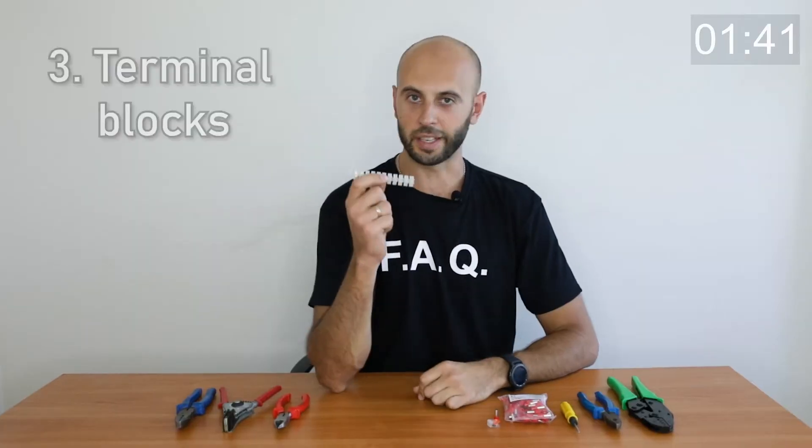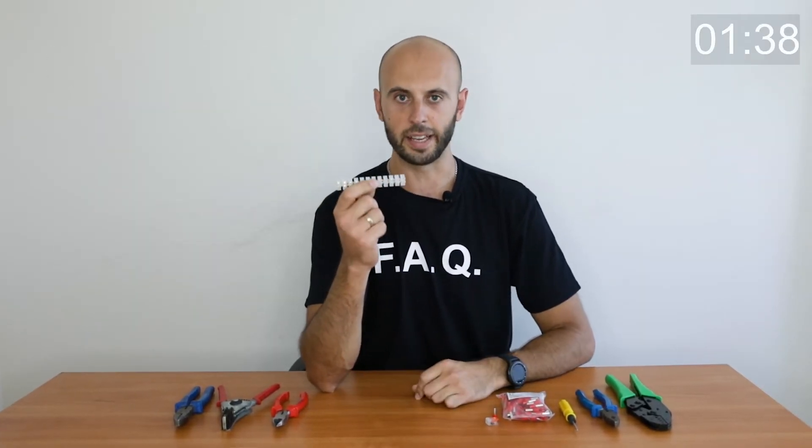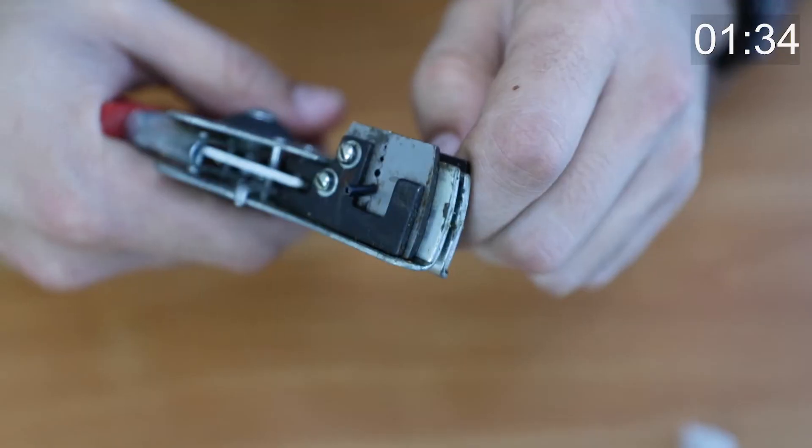Terminal blocks are the most flexible and cheapest way. They allow you to fix it on a wall or in a fuse box because of the holes between the clamps.